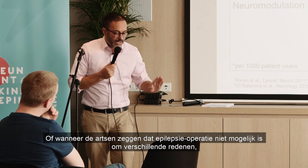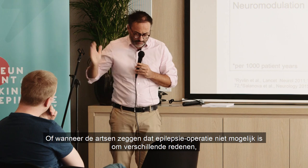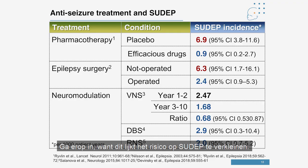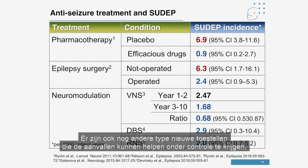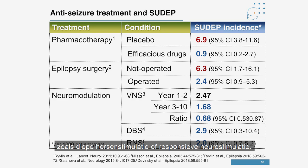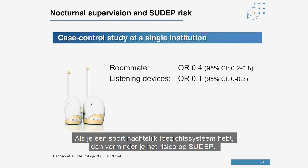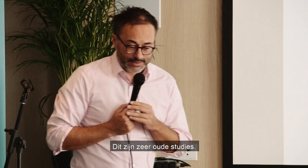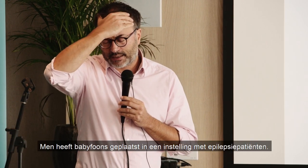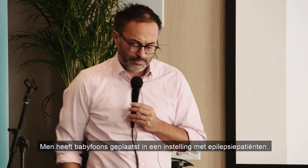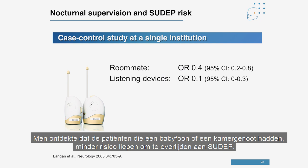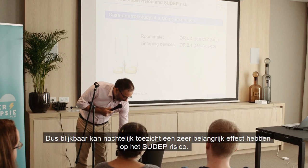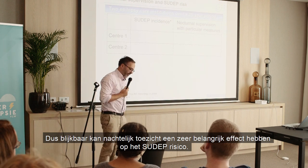If epilepsy surgery is not possible, they may offer vagal nerve stimulation — do it, because it seems to decrease the risk of SUDEP. There are also new devices such as deep brain stimulation or responsive neurostimulation that can improve seizure control. Nocturnal supervision also decreases the risk of SUDEP. Old studies from institutions where people with epilepsy lived showed that those with roommates or baby monitors were less likely to die from SUDEP.